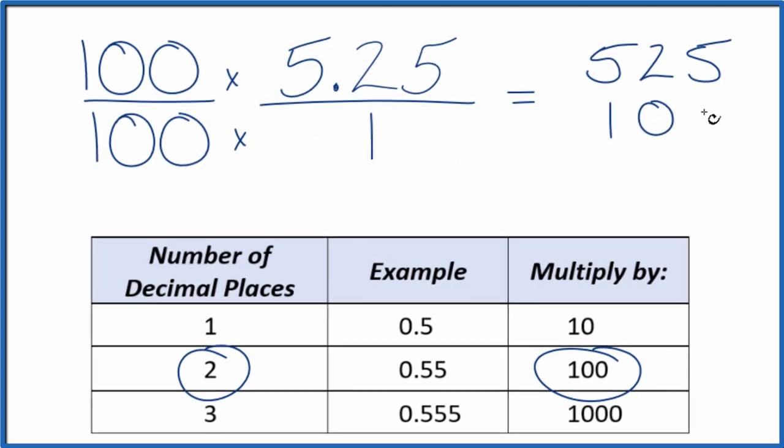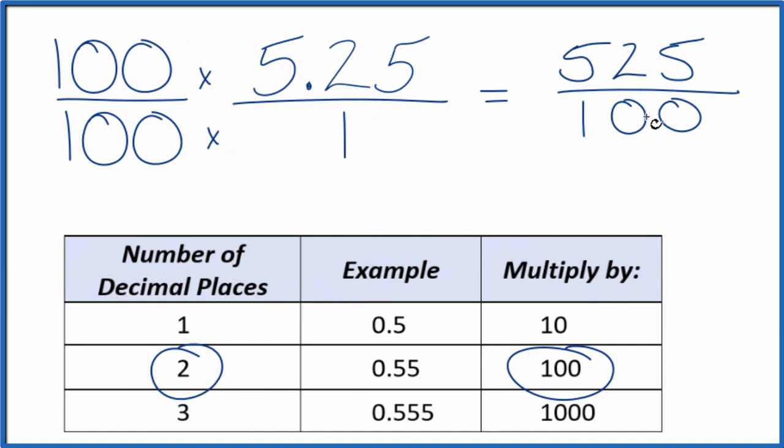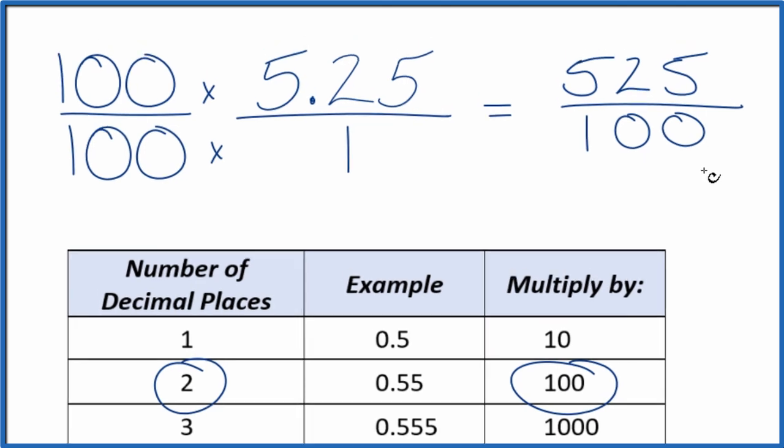100 times 1 is 100, and now we have a fraction. 5.25 equals the fraction 525 over 100. But we can reduce this. We can simplify this down to lowest terms. Let's do that.